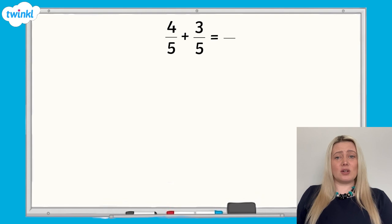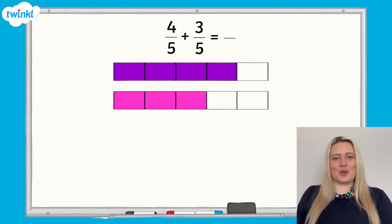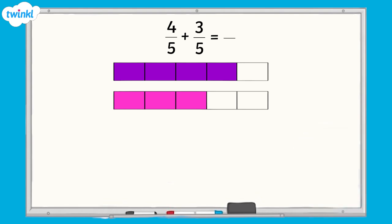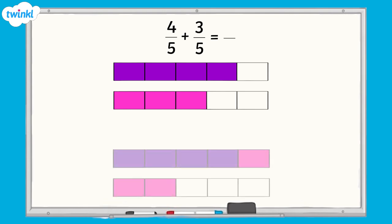Pause the video now and try to solve it. You could use a bar model to help you with this. When we add four-fifths and three-fifths together, we have seven-fifths. Using a bar model, we can see that this is more than the whole.